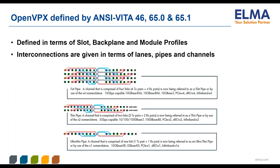The fat pipe is the most popular, which offers four transmit and four receive lanes. BASE-T Ethernet is usually implemented over a thin pipe, which provides two transmit and two receive lanes. Slot-to-slot Ethernet is now supported at speeds up to 10 gigabits per second over a single ultra-thin pipe, which provides one transmit lane and one receive lane.